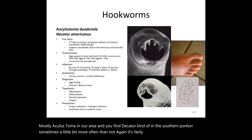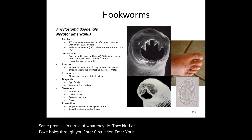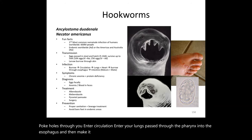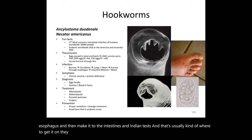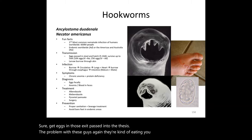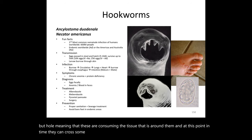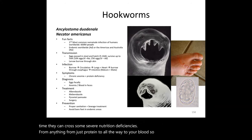Same general premise: they poke holes through you, enter the circulation, enter your lungs, pass through the pharynx into the esophagus, and make it to the intestines where they mate, mature, and produce eggs that are passed in feces. The real problem with hookworms is that they're eating you — consuming the tissue around them. This causes severe nutritional deficiencies from protein all the way to blood loss.